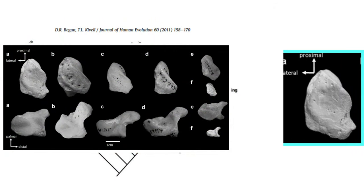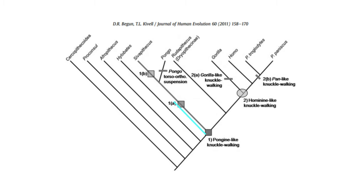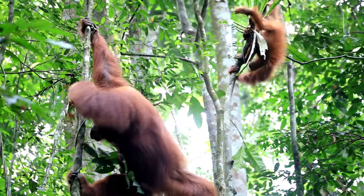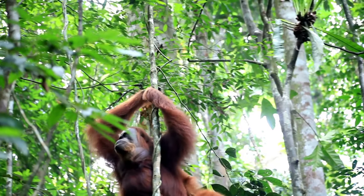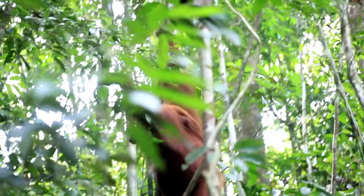The hand bones of Shivapithecus suggest it walked on its knuckles, a trait also seen in chimpanzees and gorillas. Shivapithecus appears to be an early ancestor of orangutans, with a face similar to modern orangutans, but with different jaws, teeth, and body structures. Modern orangutans are highly specialized for climbing and swinging from branches, with straight upper arm bones and curved finger bones — adaptations not seen in Shivapithecus.